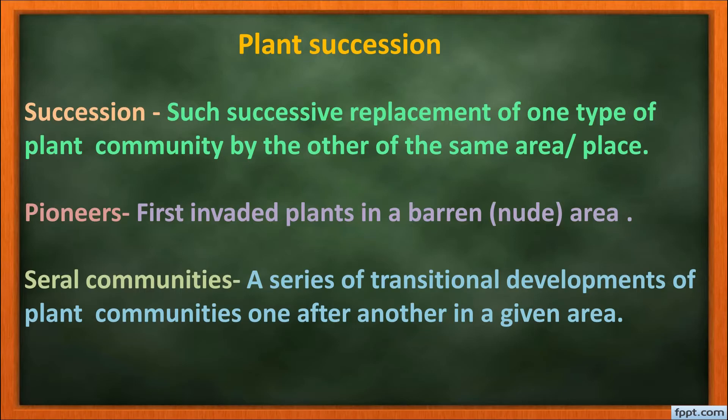One group of plants surviving in one season may be replaced by another type of plant community, and this happens repeatedly in the same area. This is what is called plant succession — the successive replacement of one type of plant community by another in the same area or place.